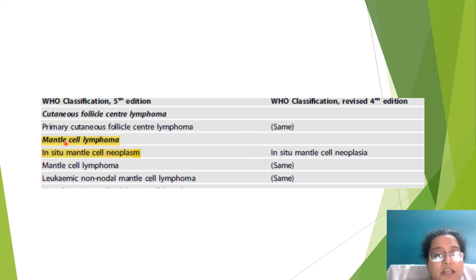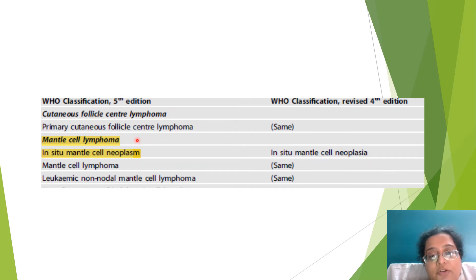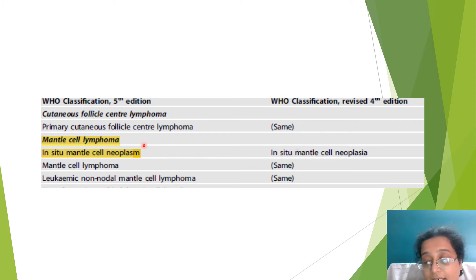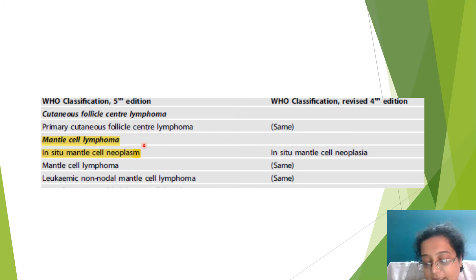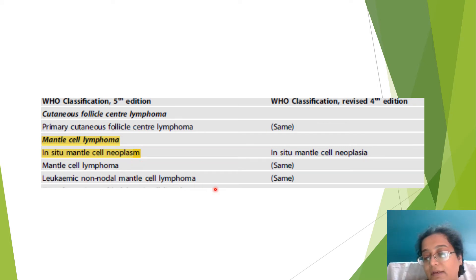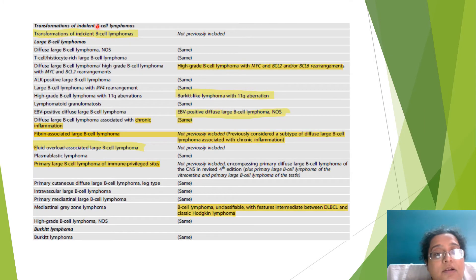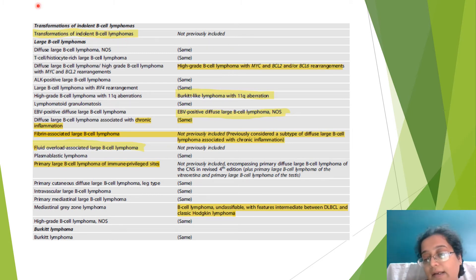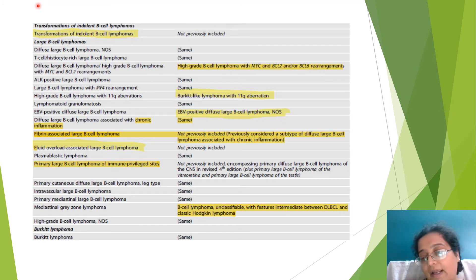Now looking at the next part of the classification: cutaneous follicle center lymphoma - primary cutaneous follicle center lymphoma - remains the same. For mantle cell lymphoma, just as an in-situ follicular neoplasm was added in the follicular neoplasm category, in-situ mantle cell neoplasm has also been added. Leukemic non-nodal mantle cell lymphoma was there previously as well. A new entity - transformation of indolent B-cell lymphoma - has been added. That concept was always in the text but not in the formal classification; now it has been added.